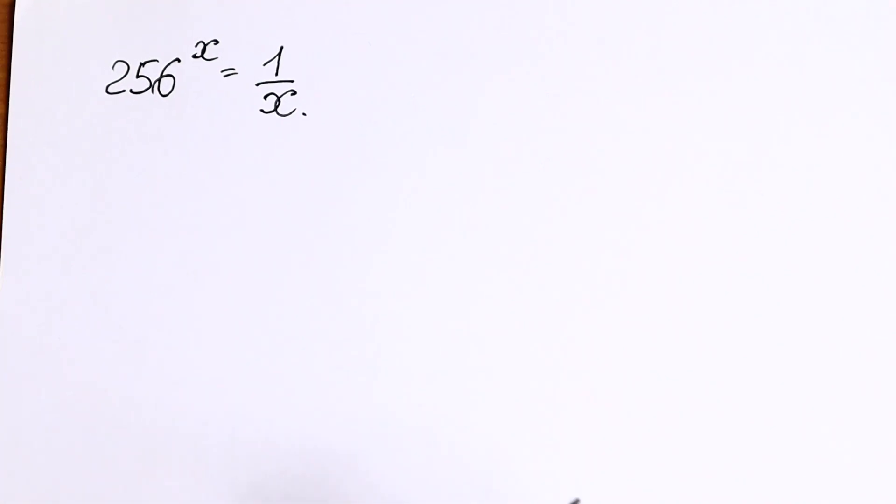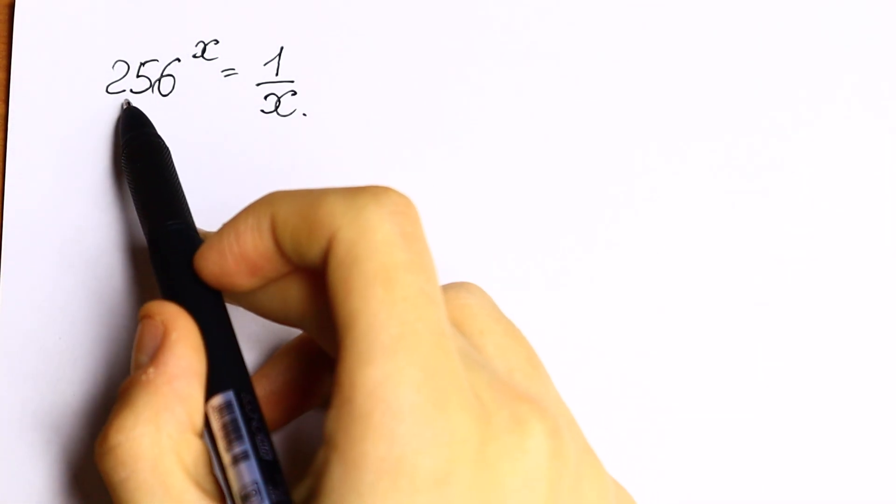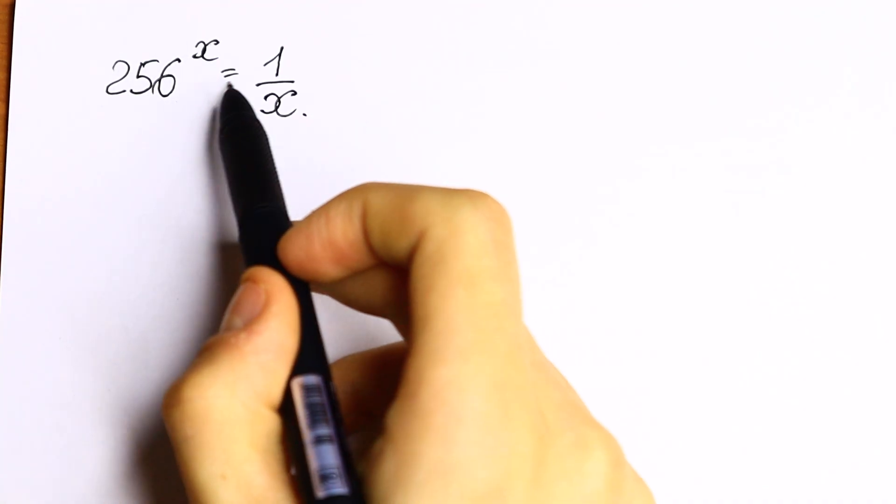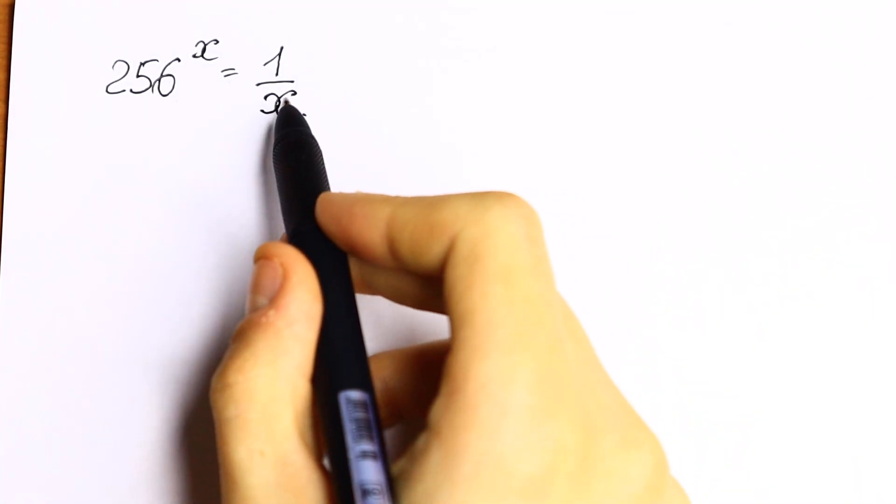Hello everyone, welcome back to High Mathematics. Today we have an interesting exponential equation. We have 256 to the power x equal to 1 over x. How can we solve this equation?